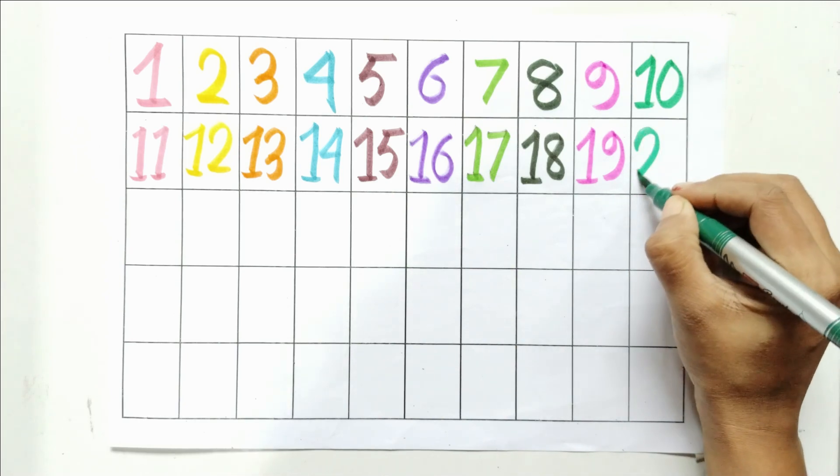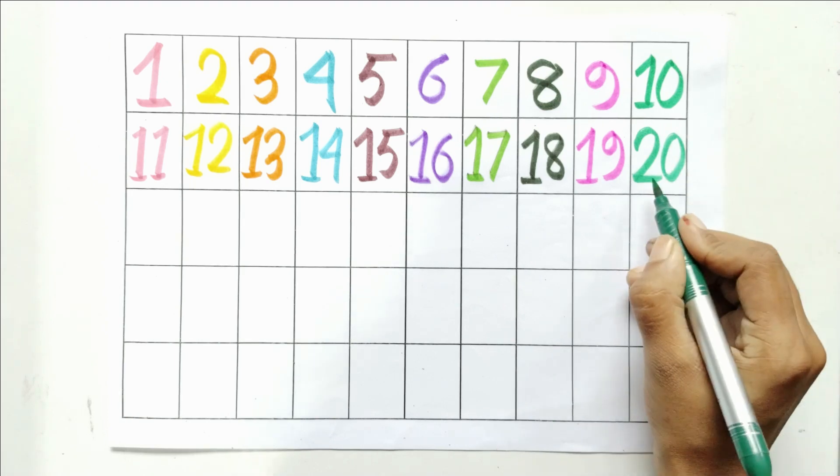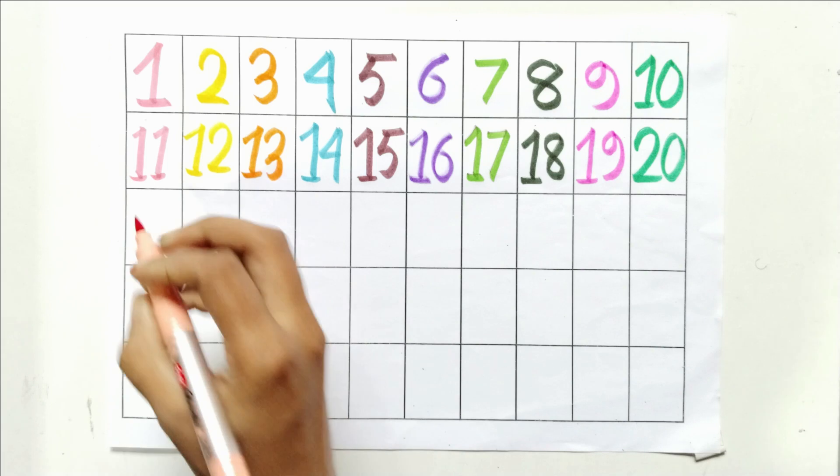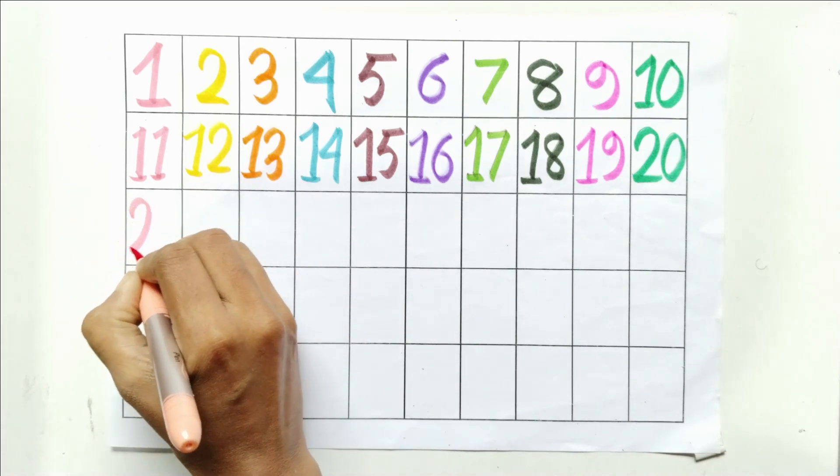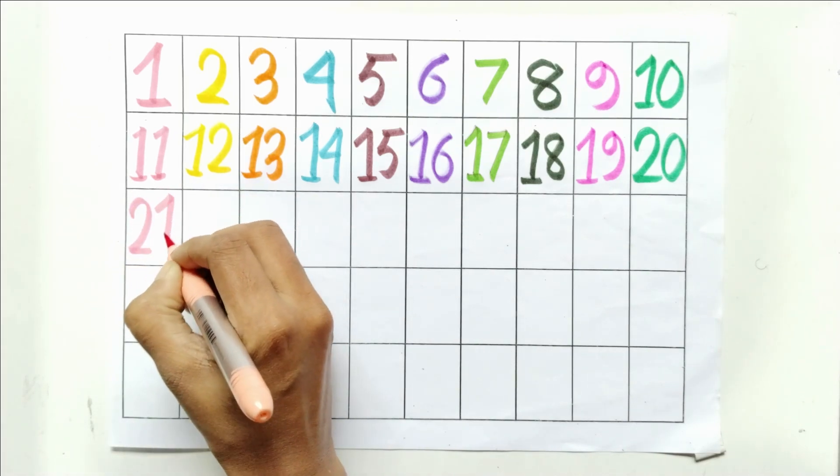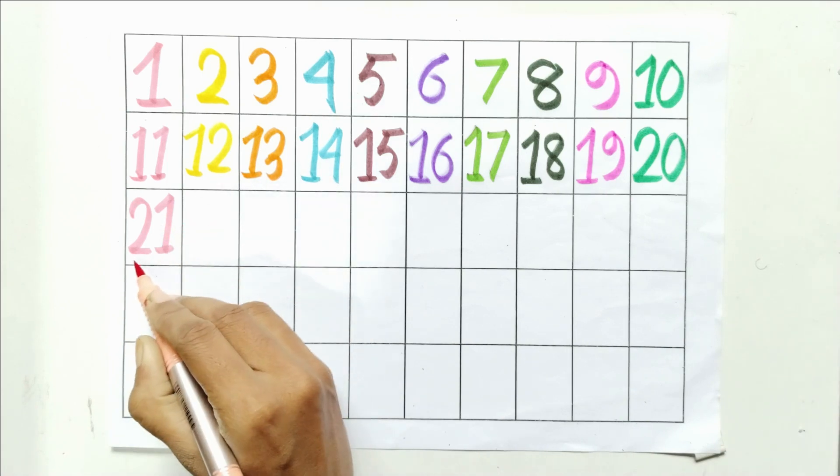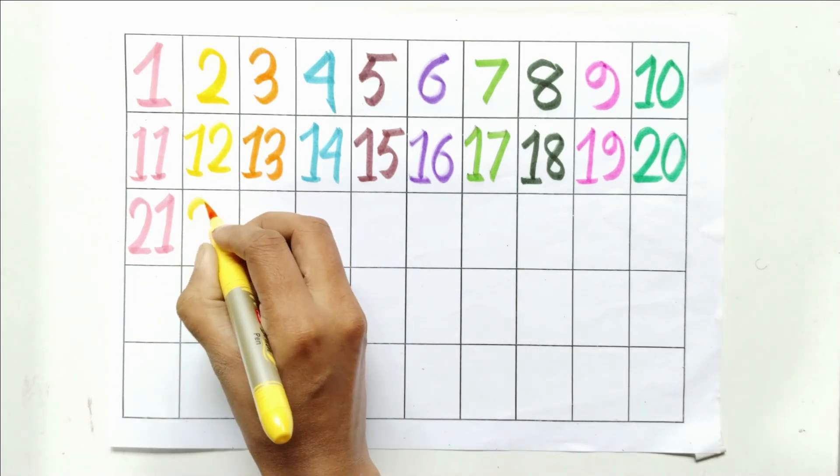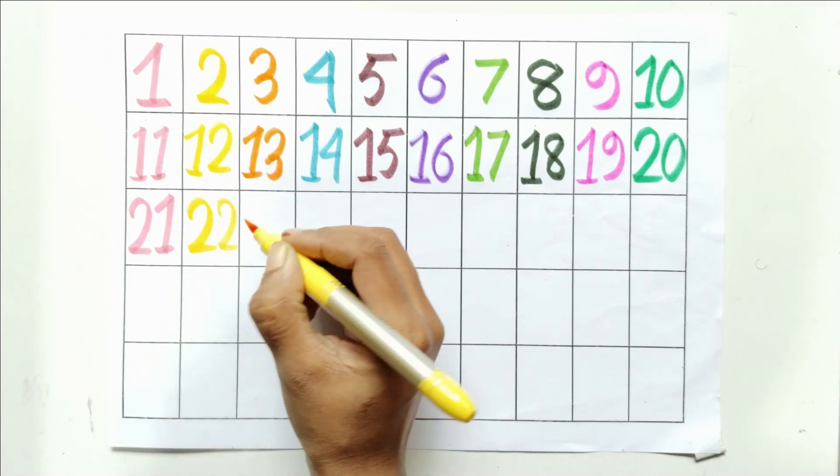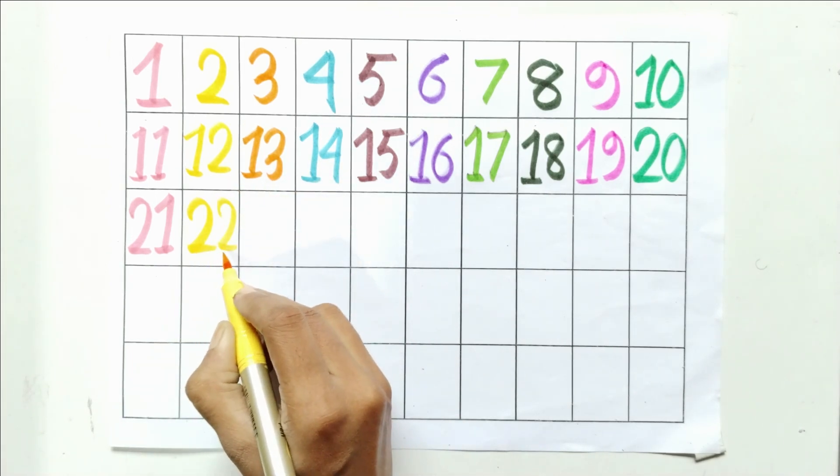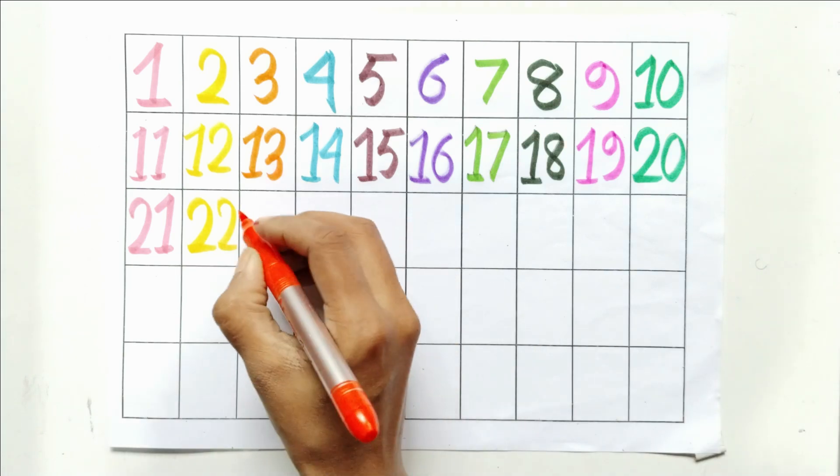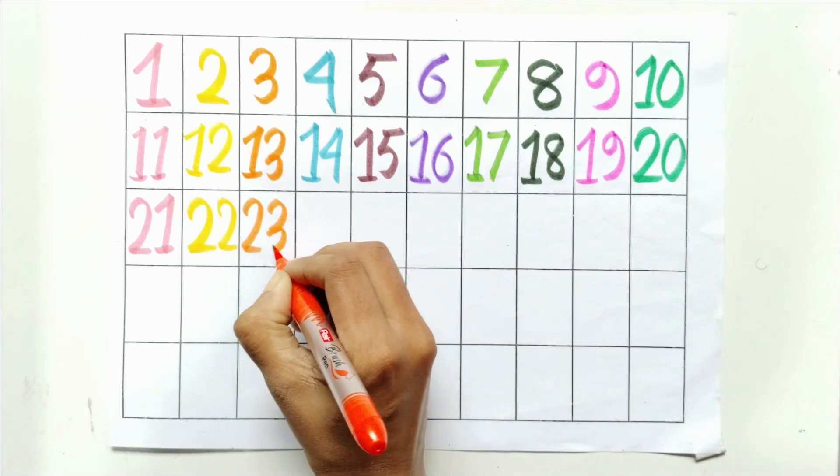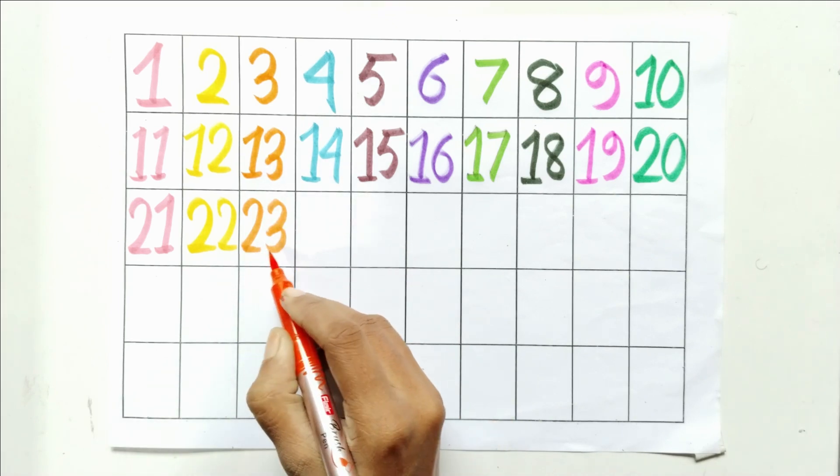Two and zero, twenty. Two and two, twenty-two. Two and three, twenty-three.